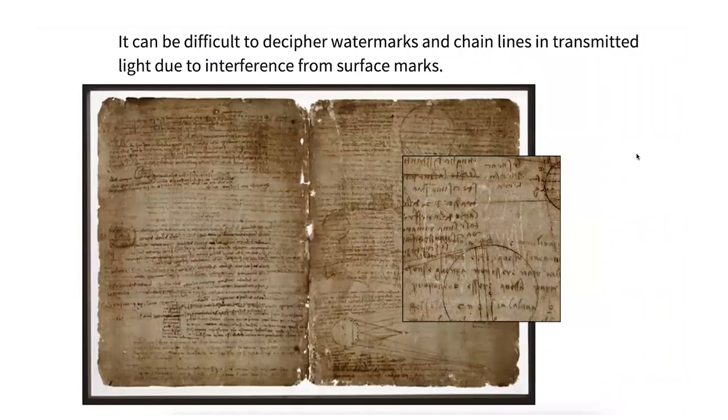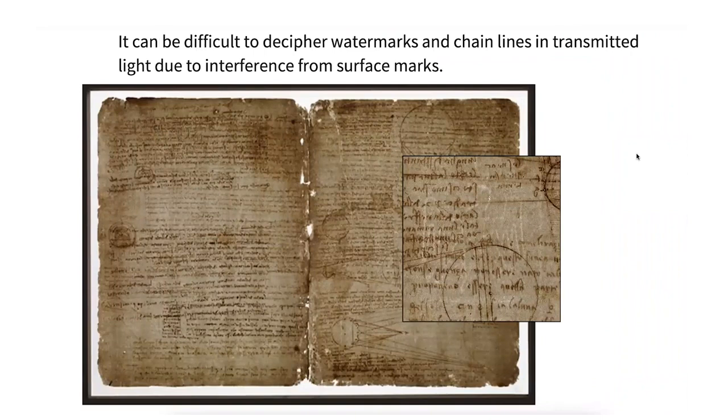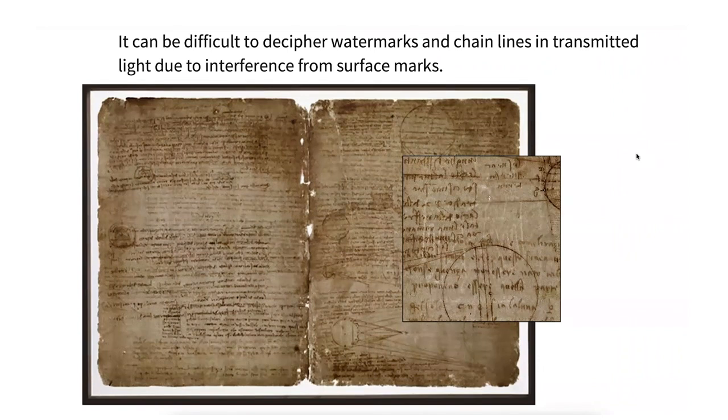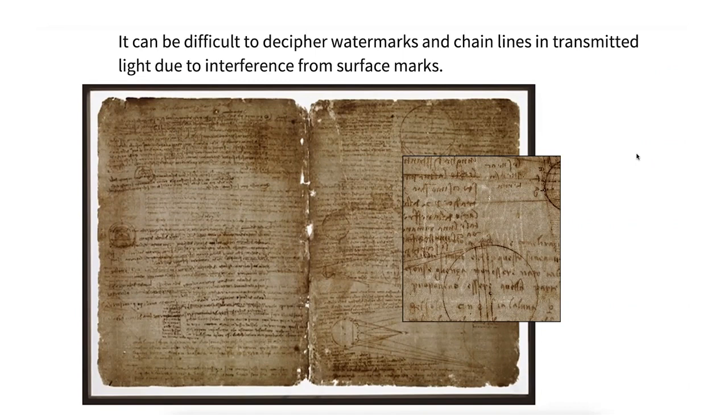So here's page one of the Lester Codex. So what you see here is we're looking at the page, actually two pages, through transmitted light held behind it. And there's sort of this outline here, buried inside all this stuff, the surface features that we want to ignore. And it's a little hard to see. I think if you look at this particular page, you can decide it's an eagle, but some pages are even more difficult to see.